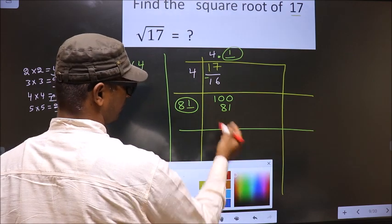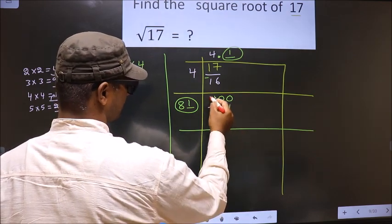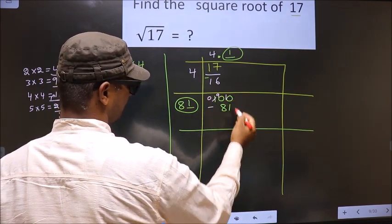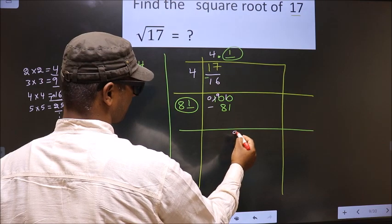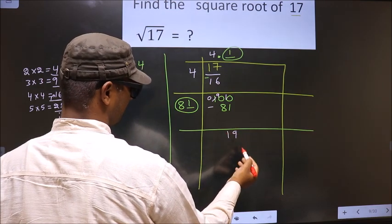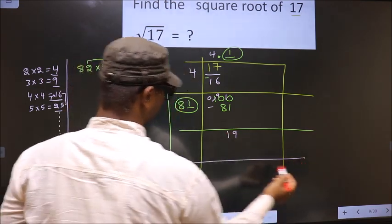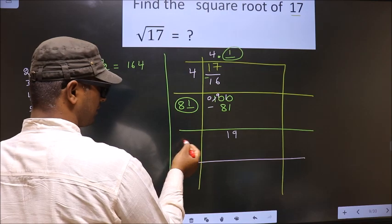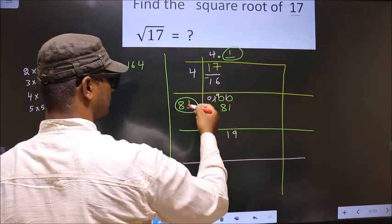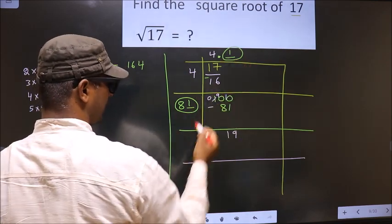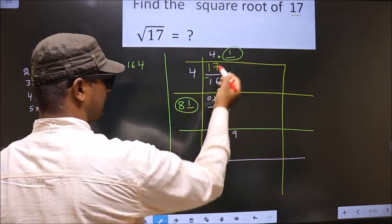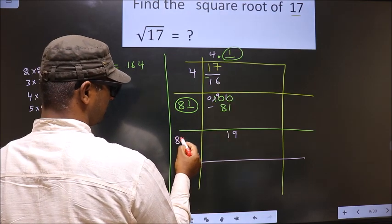Now subtract: 10 minus 1 is 9, 9 minus 8 is 1 — so the remainder is 19. Now here we should add these two numbers: 81 plus 1 is 82.